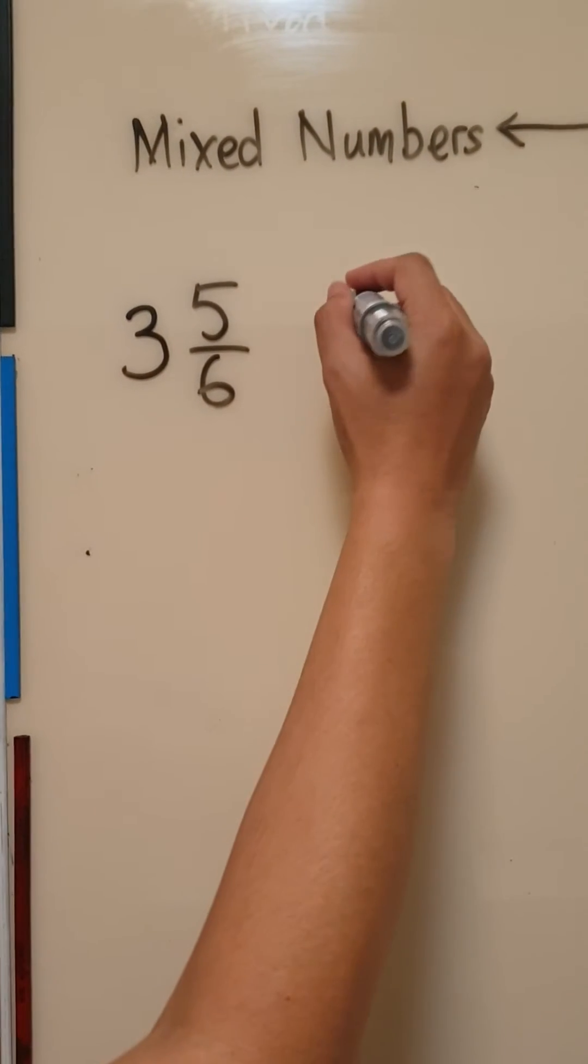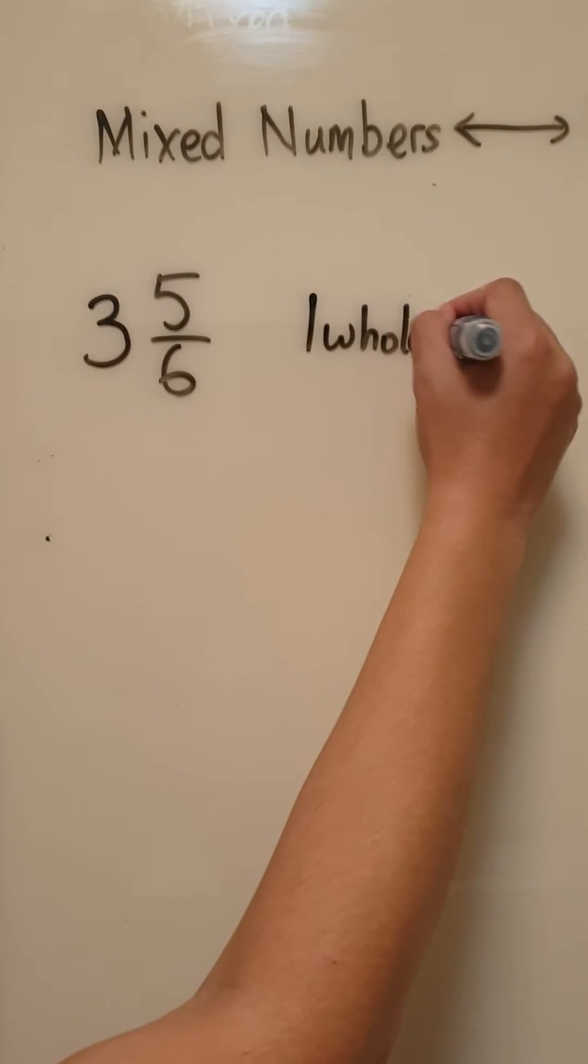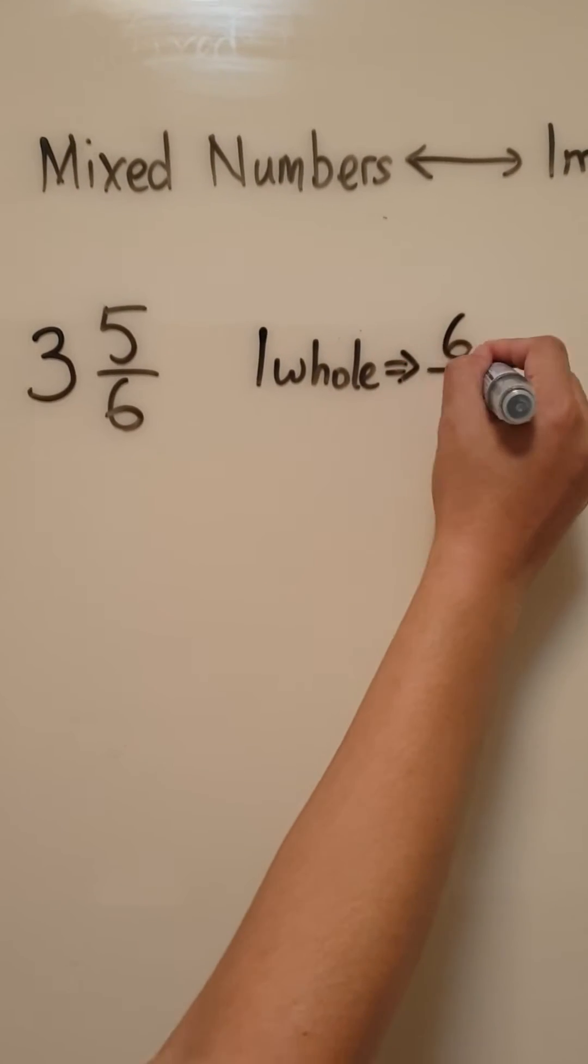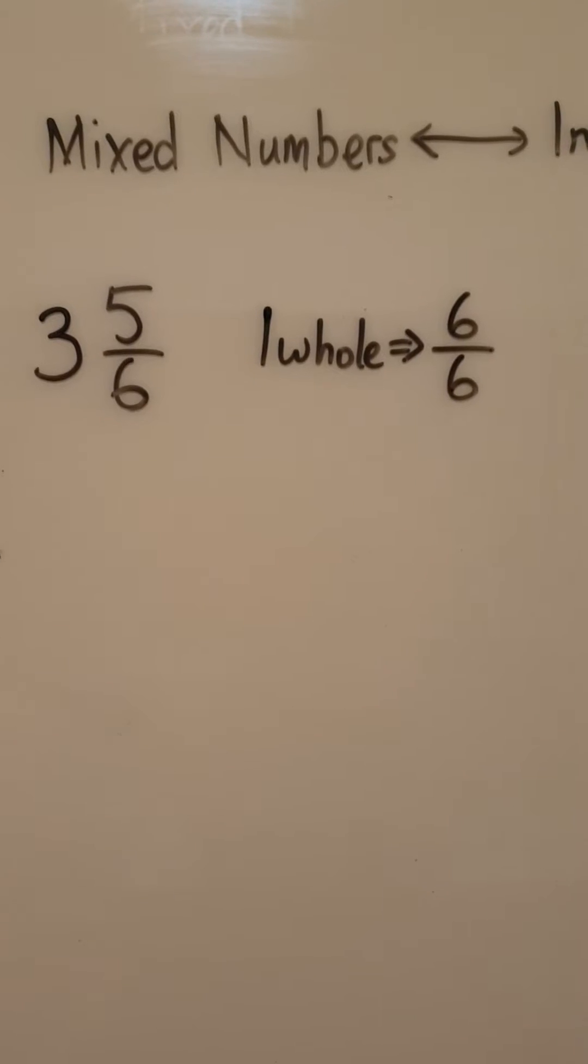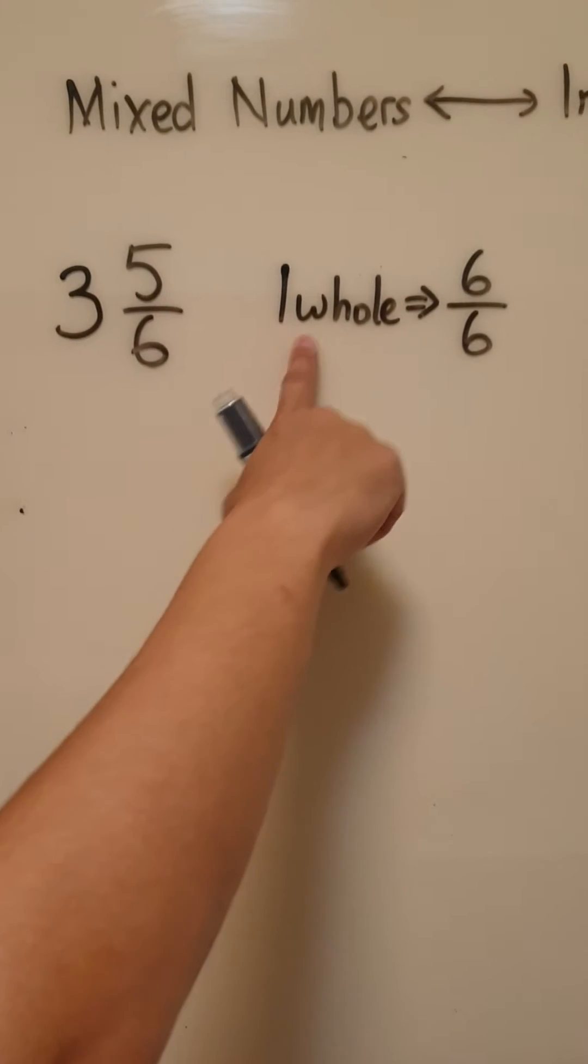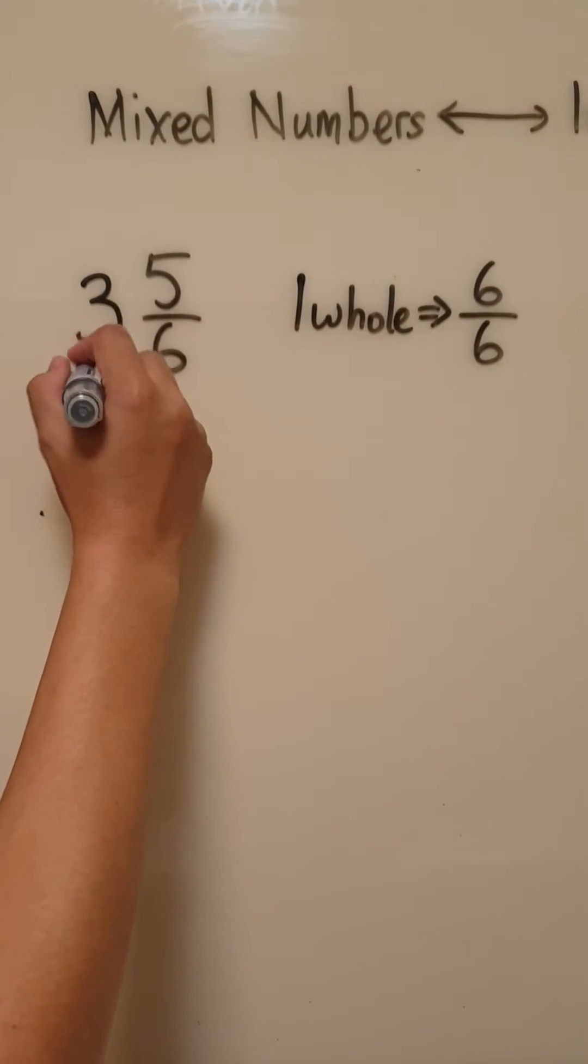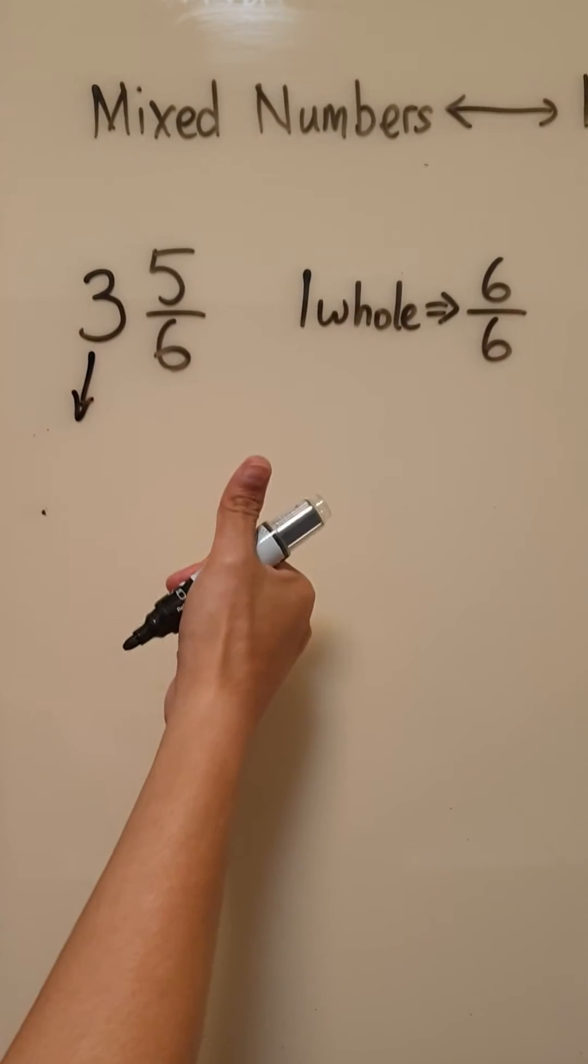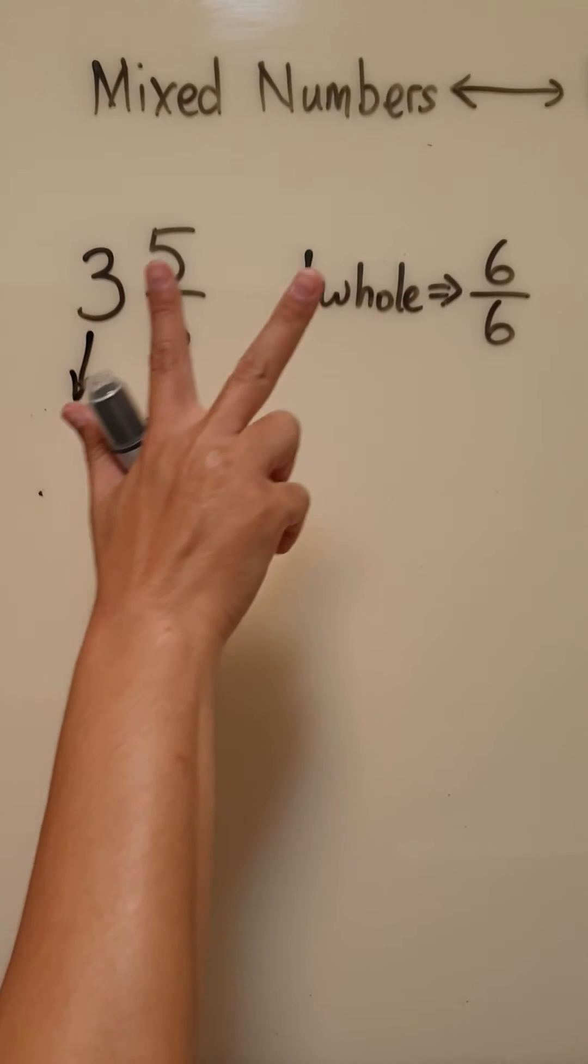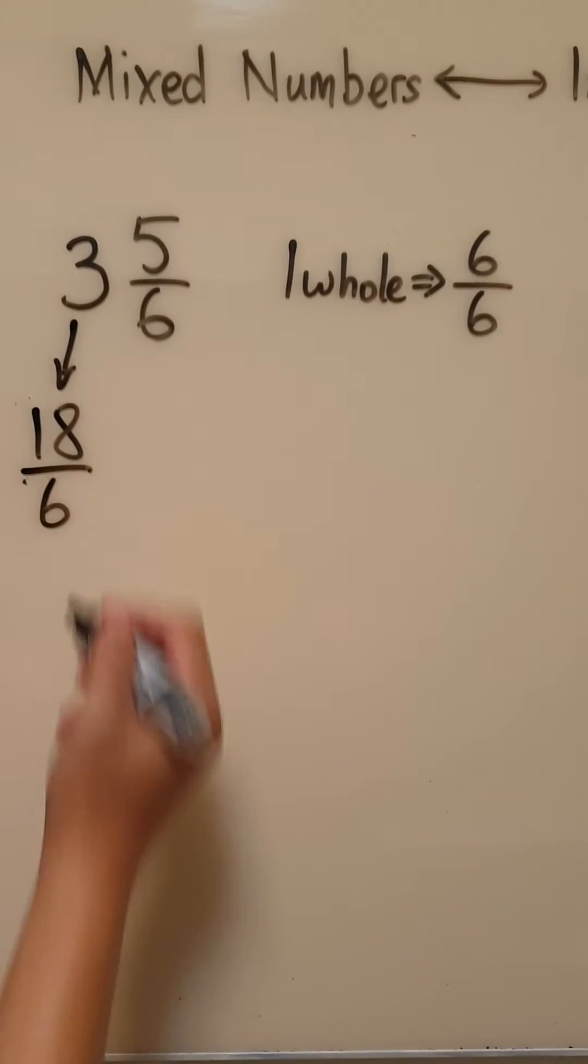So from the previous video you should know that in this fraction one whole is equivalent to six sixths or six out of six. However we have three wholes here. So if one whole is made out of six parts, three wholes will give us six, twelve, eighteen parts or eighteen sixths.